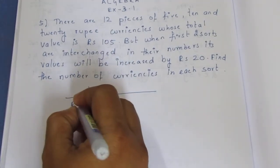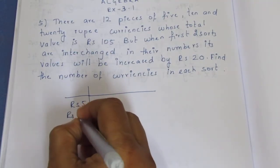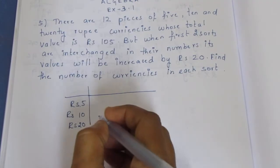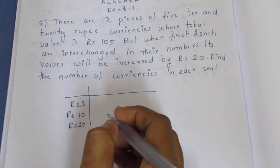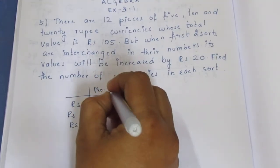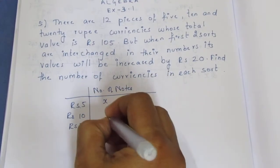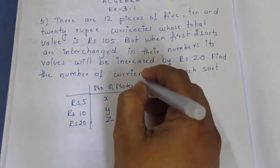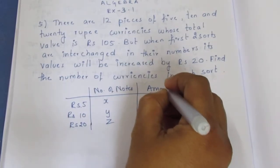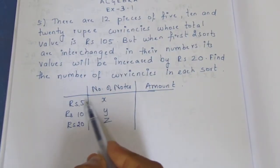The denominations are rupees 5, 10, and 20. We will find the number of notes. We will assign variables x, y, z for each denomination. Amount for each type of currency will be calculated.